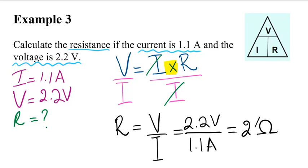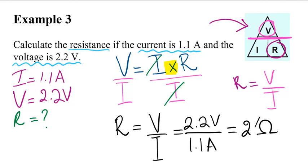We can also use the triangle here as a shortcut. We need to solve for R. R equals — V is at the top of the line and I is at the bottom — so R equals V over I. There are two ways to solve these problems: you can use the formula V equals I times R and manipulate it to isolate the variable, or you can use the triangle method, which is an easier way. Thank you for watching and don't forget to hit subscribe.